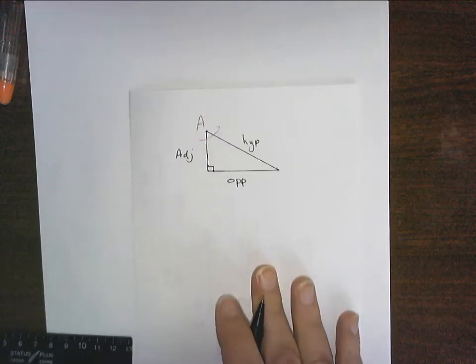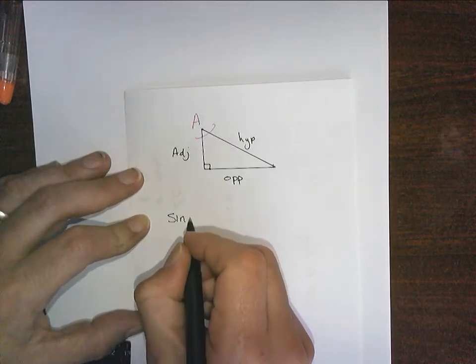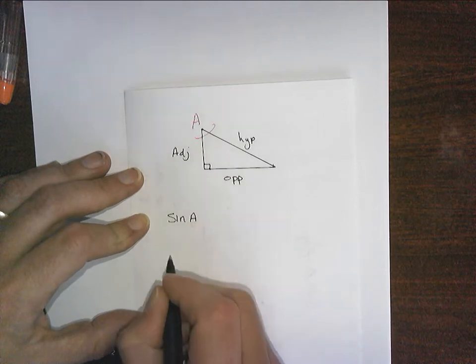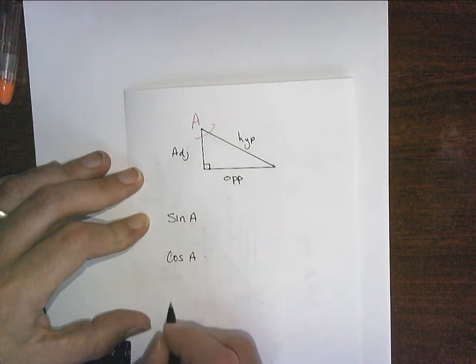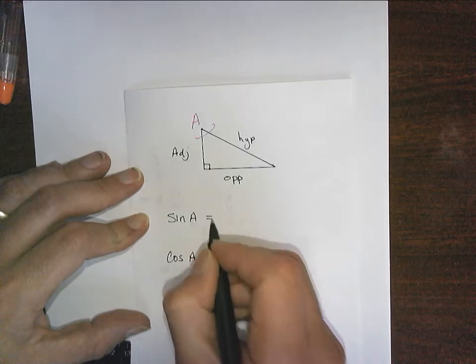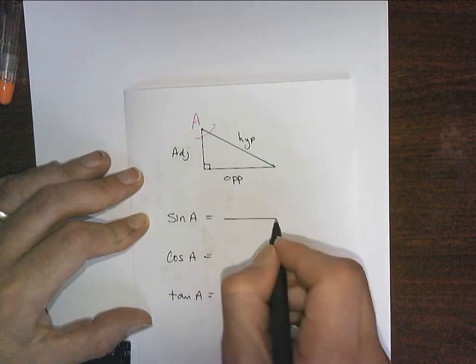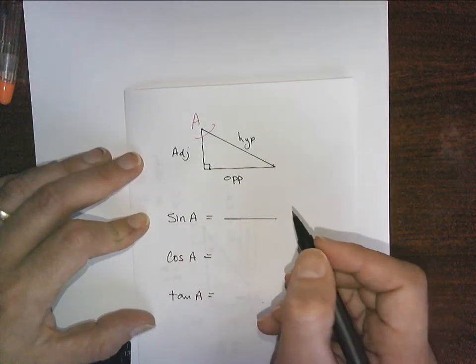And now you have to learn sine of angle A, cosine of angle A, and tangent of angle A. These are all ratios, and that means that they are a division question.